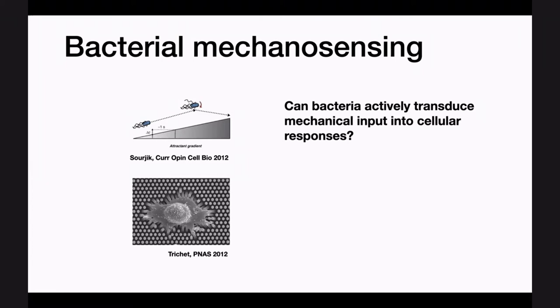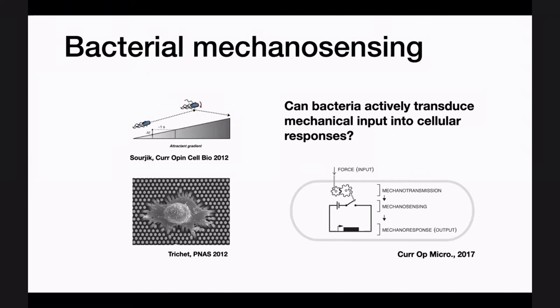This brings us to problems related to what we call mechanosensing — force sensing in organisms. Mechanosensing in eukaryotes is quite well established; we know eukaryotic cells can pull on the substrate and sense its stiffness. In bacteria, it's less clear. We know they can sense the chemistry of their environment, but we don't know much about whether and how they can sense the mechanics. One of the important questions my lab asks is whether and how bacteria can actively sense the mechanics of their environment, using engineering, physics, microbiology, and genetics.